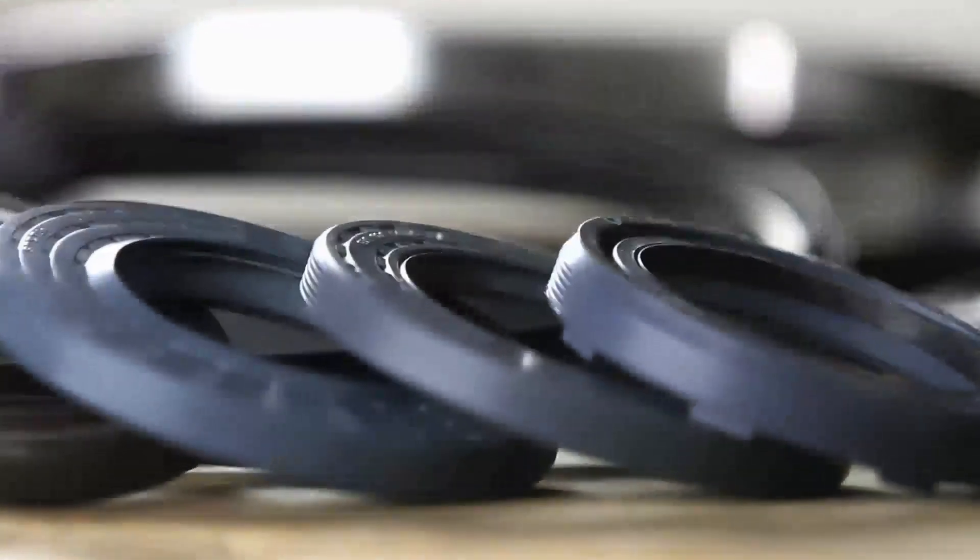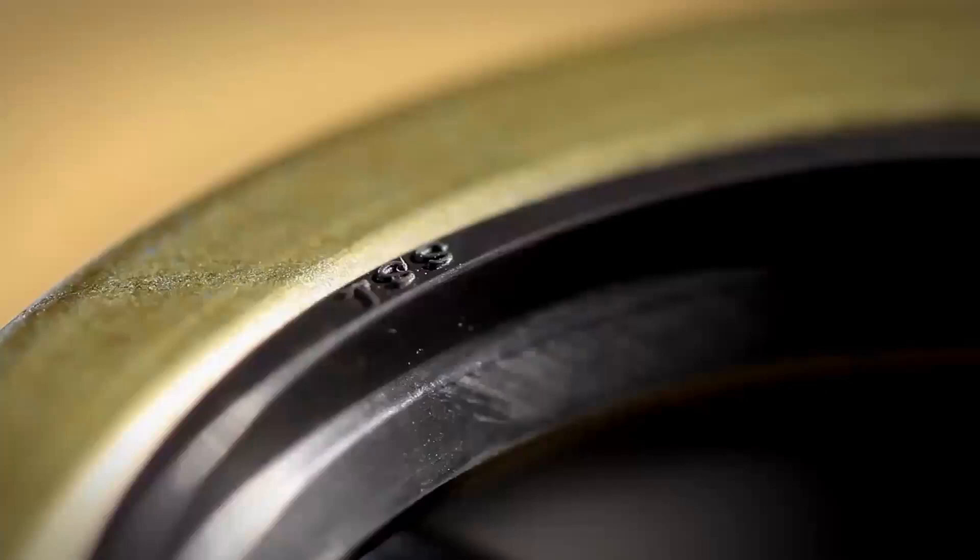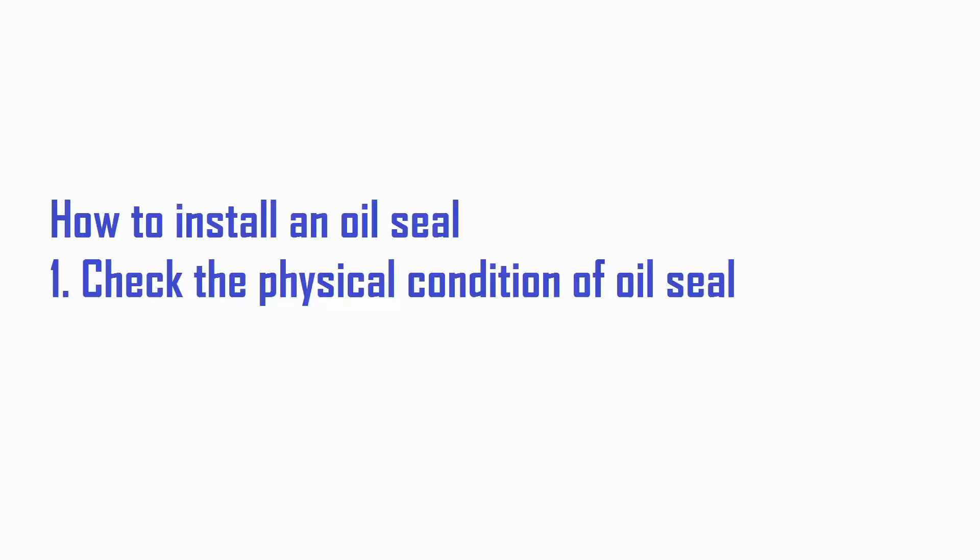After knowing about the function of the oil seal, following are the steps for installing the oil seal correctly. Check the physical condition of the oil seal to be installed, both from the outside and the inside of the oil seal.